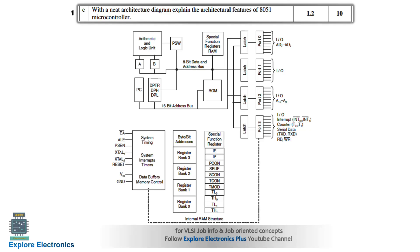There is a program counter, a DPTR (data pointer), and also RAM and ROM internally. You need to specify the size of the RAM and ROM. There are 4 I/O ports — Port 0, Port 1, Port 2, Port 3 — each consisting of 8 I/O pins, giving 32 I/O pins in total.